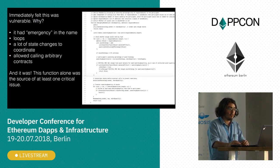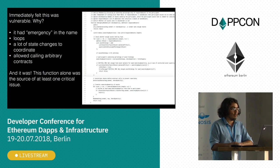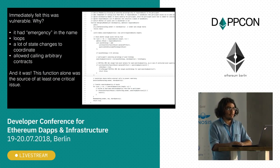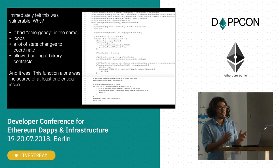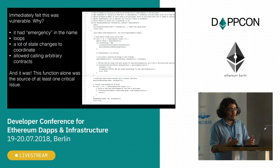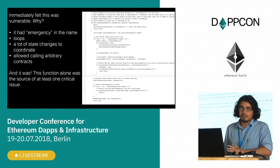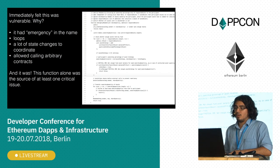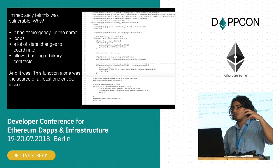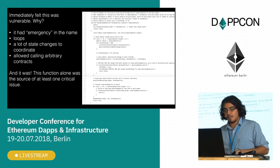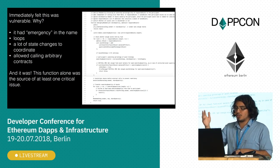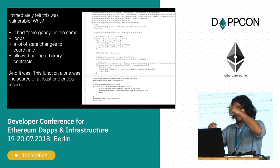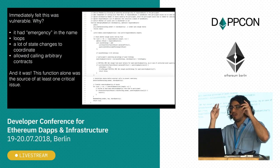Here's another example of code where I found a critical vulnerability — it was in Melonport. I saw this code and immediately thought, this is vulnerable. Why? Well, first things first, they had 'emergency' in the name, so something was going on there. The other thing is there were a lot of loops. In Solidity, loops are not something to avoid outright, but they are problematic — you can't use them as liberally as you would otherwise. A lot of the time you just can't fit the entire loop in a block, and it ends up being a denial of service vector. There was a lot of state changes to coordinate simultaneously, and it was possible they forgot something.